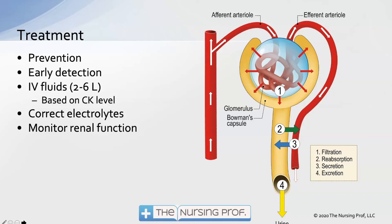We need to monitor renal function tests and watch urine output carefully. If urine output starts going down and we move into an oliguric state, we'll want to run BUN and creatinine to find out what's happening with renal function.